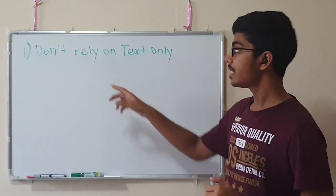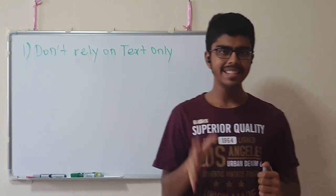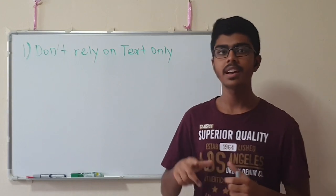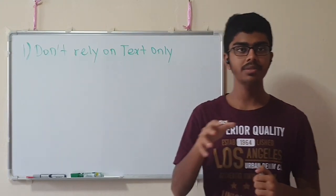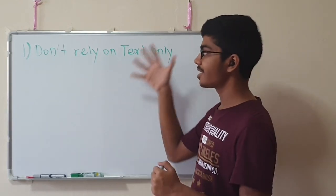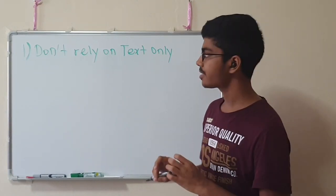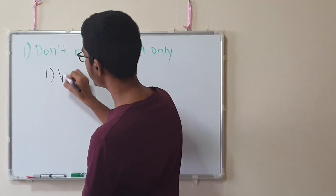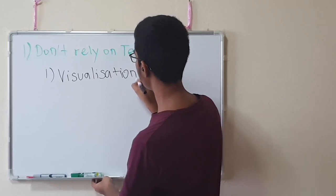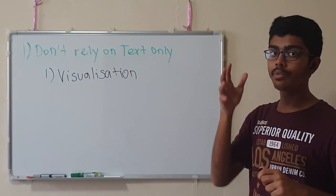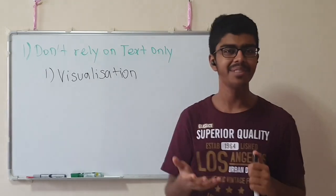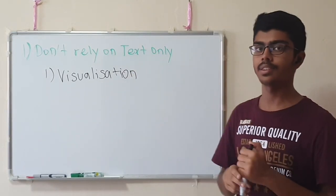All right, the number one strategy is to not rely on text only. And this strategy is especially helpful for inorganic chemistry chapters such as periodic table or transition metals, especially even atomic structure as well, where they ask you to explain the trend in physical and chemical properties across a period and down a group. This strategy will help you. And how can you not just rely on text? The first strategy I'll give you is visualization.